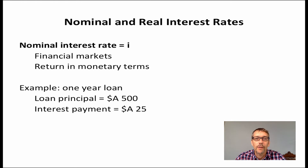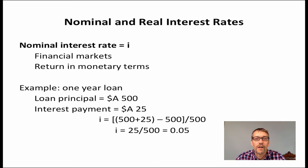At the end of the year, the amount that needs to be repaid is $525 — the loan principal plus the interest payment. To calculate the nominal interest rate, take $525, subtract $500 (the initial principal), and divide the whole thing by $500. This gives us $25 over $500, or 0.05. To convert this to a percentage, we simply multiply by 100, and this gives us 5%. So the nominal interest rate in this case is 5%.